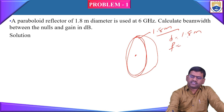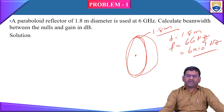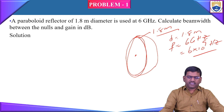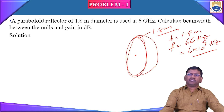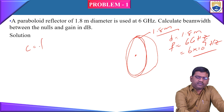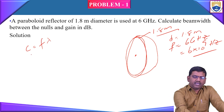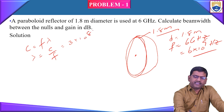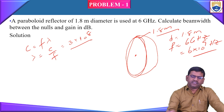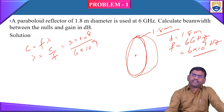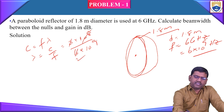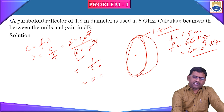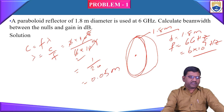The frequency is given as 6 gigahertz, which means 6 × 10⁹ Hz in SI units. We need to calculate the beam width between the nulls and the gain in dB. Before calculating the beam width, let us calculate the value of lambda. We know that c = f·λ, so λ = c/f = 3 × 10⁸ / 6 × 10⁹ = 1/20 = 0.05 meters.